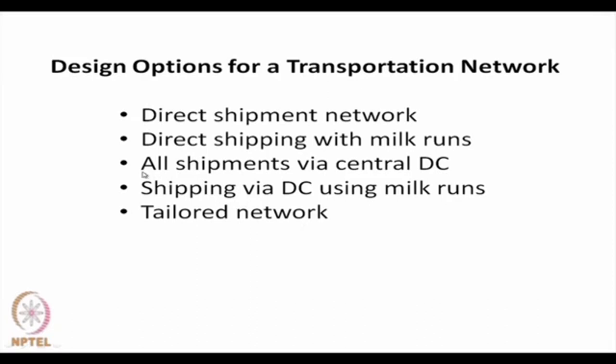There are different design options for a transportation network: direct shipment network, direct shipping with milk runs, all shipments via central distribution centre, shipping via distribution centre, shipping via distribution centre using milk runs, and tailored network — making 5 different options in total.